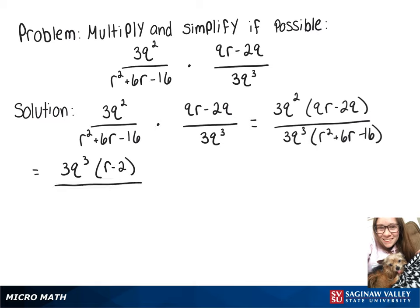On bottom, we still have our 3q to the third, and then we have a quadratic that we can factor, and that'll turn into r minus 2 times r plus 8.